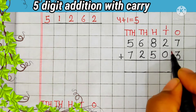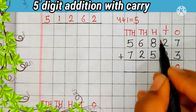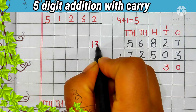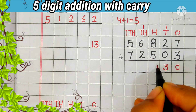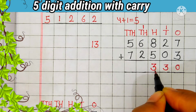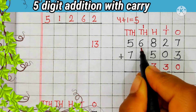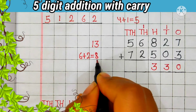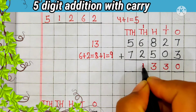2 plus 1 carry is equal to 3. Now add the digit at the 100s place. 8 plus 5 is equal to 13. 13 is a 2-digit number. Now we will carry 1 to the 1,000s place, and 3 comes in the answer. Now add the digit at the 1,000s place. 6 plus 2 is equal to 8; 8 plus 1 carry is equal to 9. Answer is 9.